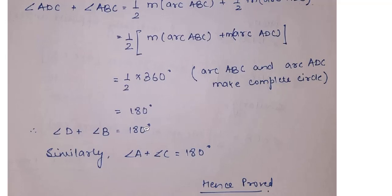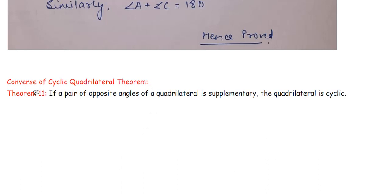Similarly, you will write angle A plus angle C is also 180. So we have been able to prove the theorem on cyclic quadrilateral. Let's move ahead to see the converse. Converse means reverse. The reverse says that if a pair of opposite angles of a quadrilateral are supplementary, the quadrilateral is cyclic.